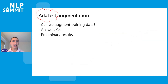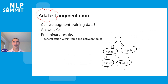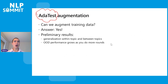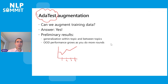We have preliminary results showing really good generalization both within topics and between topics — it's not just learning a specific pattern but it generalizes. Out-of-domain performance grows as you do more rounds. Sometimes it dips a little because of a shortcut, but then it goes back up.